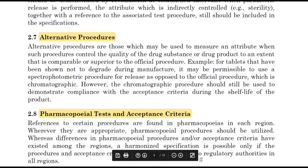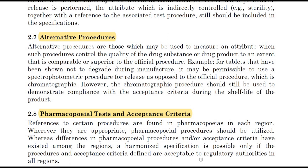Alternative procedures are those which may be used to measure an attribute when such a procedure controls the quality of the drug substance or drug product to an extent comparable or superior to the official procedure. For tablets shown not to degrade during manufacture, it may be permissible to use a spectrophotometric procedure for release instead of the official chromatographic procedure. However, the chromatographic procedure should still be used to demonstrate compliance with acceptance criteria during the shelf-life of the product.